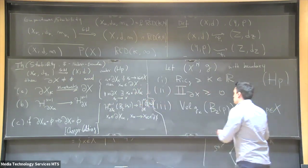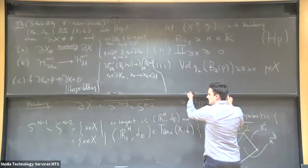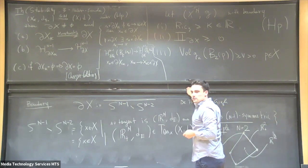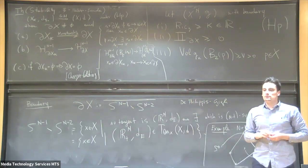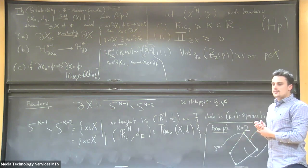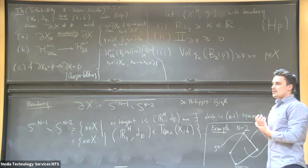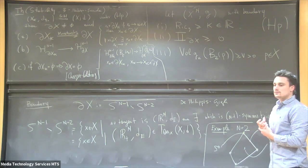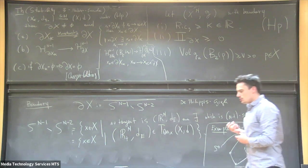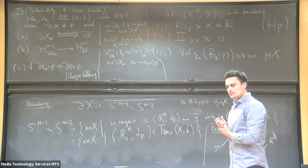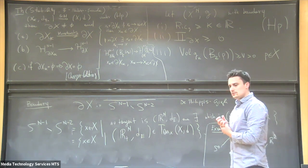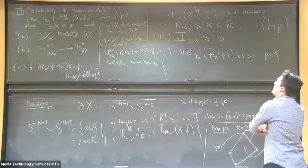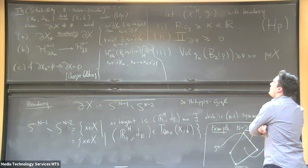Now I want to present a theorem regarding the structure of boundaries. This theorem requires all three assumptions — in particular the non-collapsing assumption is important. Without assumption 3, Kuratowski convergence of the boundaries can fail: for instance, a cylinder shrinking to a line (with caps) has no boundary in the limit as a segment, yet boundary components can appear in the limit.